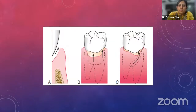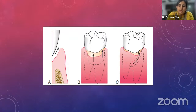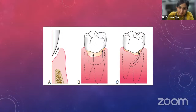According to involved tooth surfaces, pockets can also be classified: a simple pocket involves only one surface; a compound pocket involves more than one surface; and a complex pocket originates on one surface and twists around the tooth to involve one or more additional surfaces, commonly found in furcation areas.